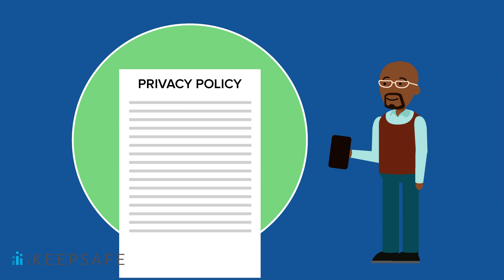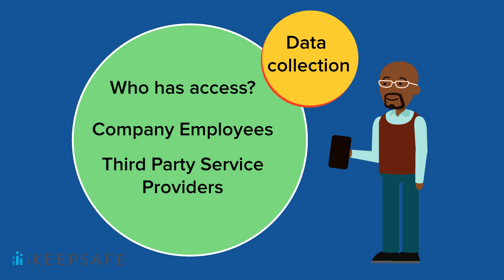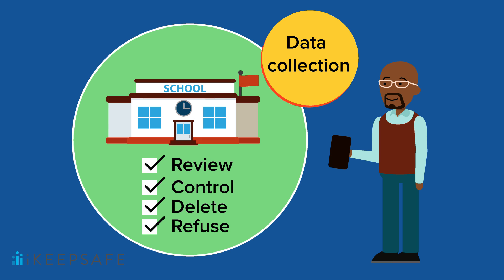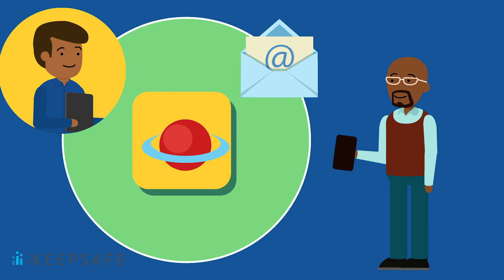Reviewing the privacy policy is very important, as there are many things you'll need to be sure are included. Foremost, you'll need a description of all the data that will be collected or maintained, noting who has access to the information and how they will use it — taking into account both the company employees and third-party service providers whose terms of service you haven't agreed to — an acknowledgment that the school can review, control, have deleted, or refuse to provide any information, what procedures they have established in case of a data breach, and how to contact the operator regarding privacy practices.